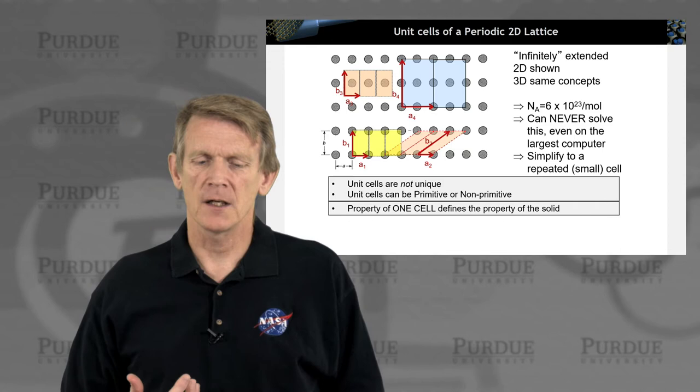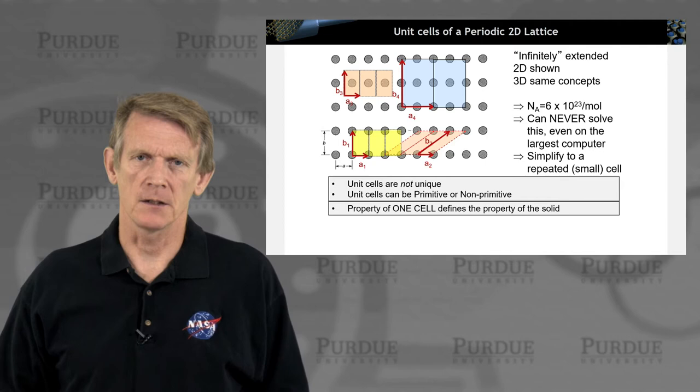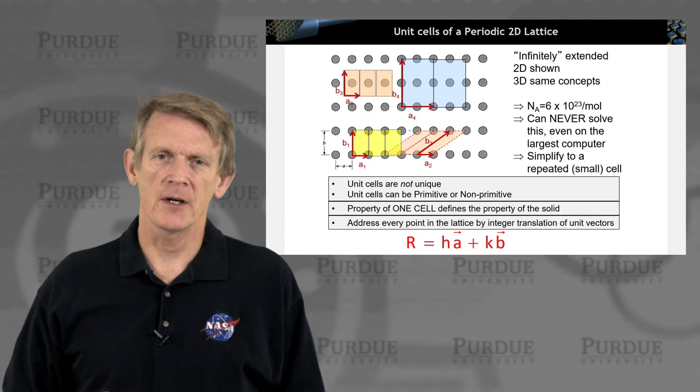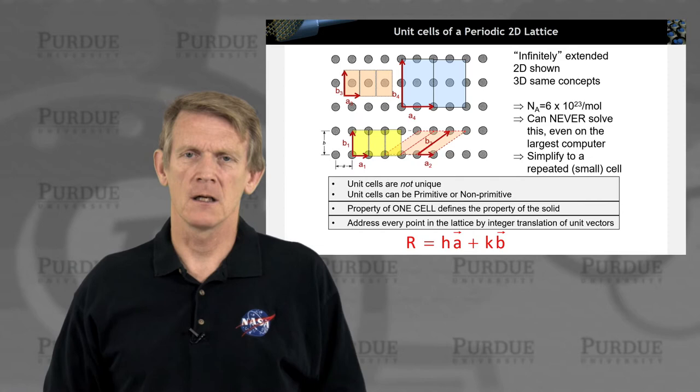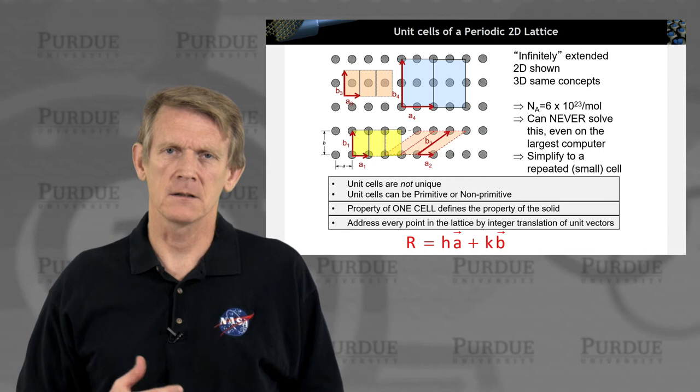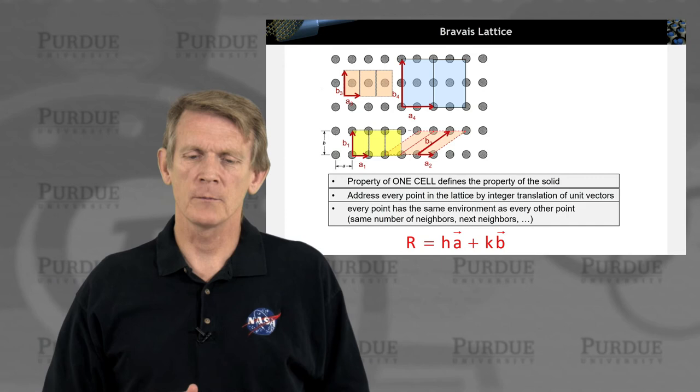Now, the way to define a cell is that the one cell defines the property of the whole solid. So you can get to every atom in the system through that, and you can address that with integer numbers that reference these basis vectors A and B. So through simple translation with integer numbers, you can address every single atom in the crystal. That's the definition of a unit cell.